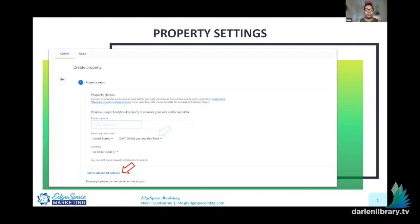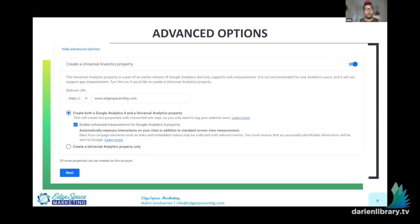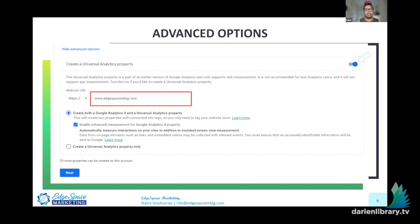You then want to click 'Show Advanced Options,' which brings you to a screen where you'll click the button to turn on the creation of a Universal Analytics property. Google has two types of properties: Universal Analytics, which is legacy and being sundown in 2023, and the new Google Analytics 4, which is the new reporting model they're encouraging all accounts to move toward. You turn on the button, type in your domain name, and click to create both a Google Analytics 4 and a Universal Analytics property.